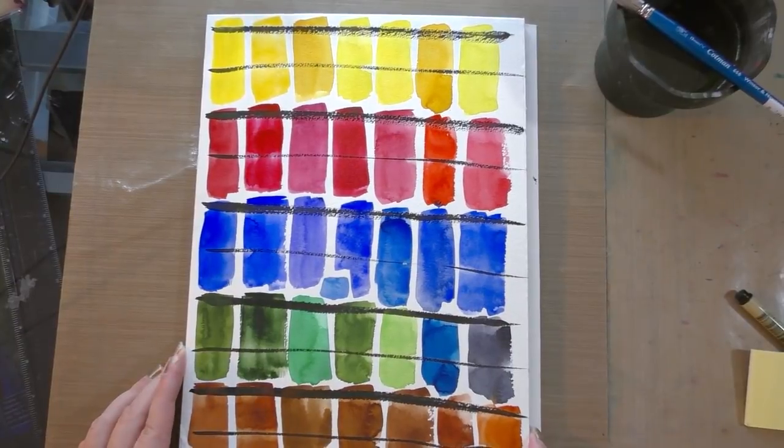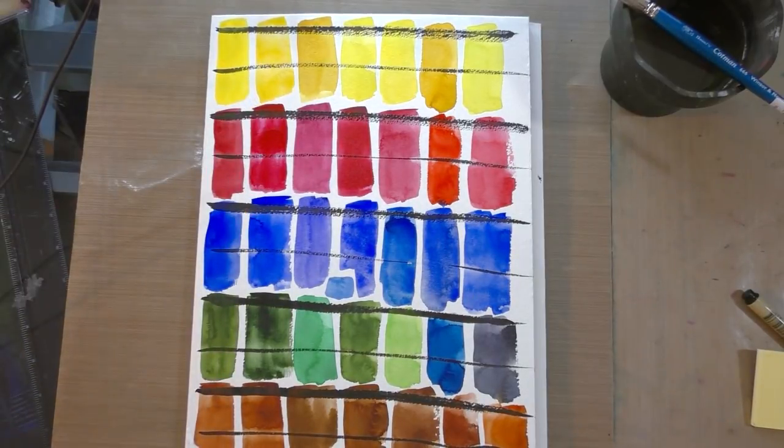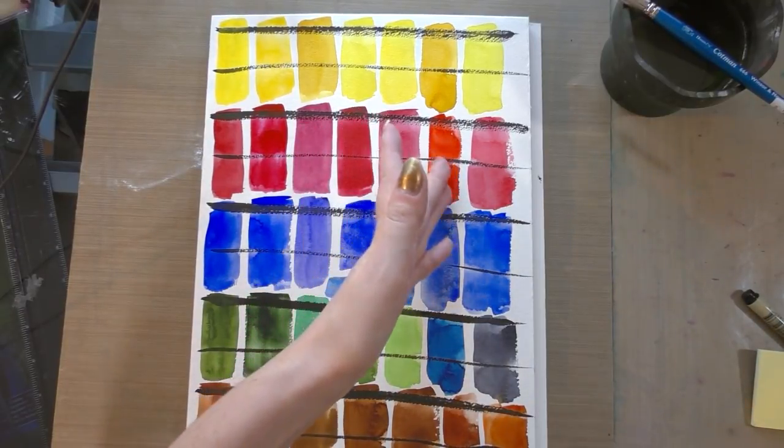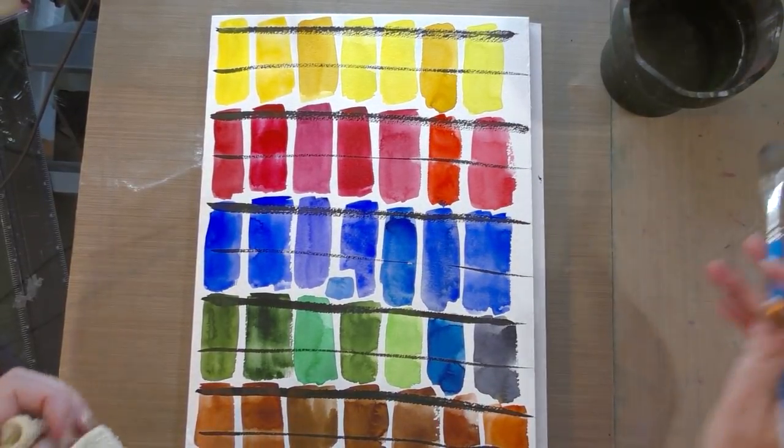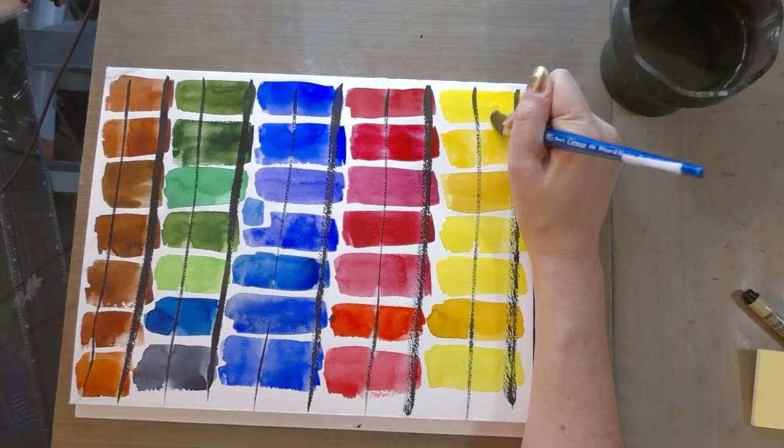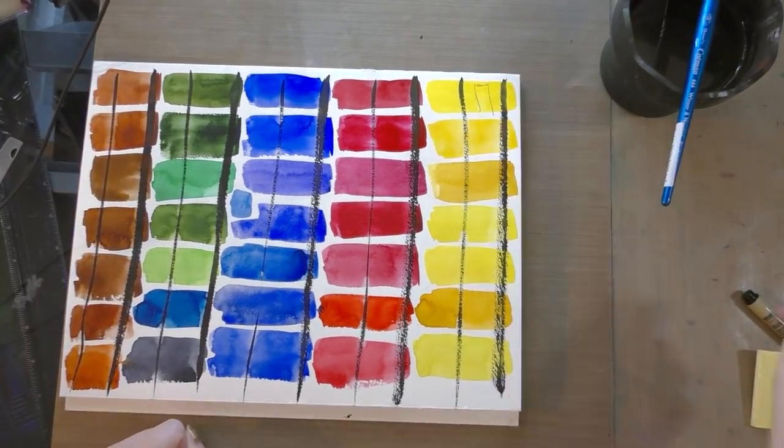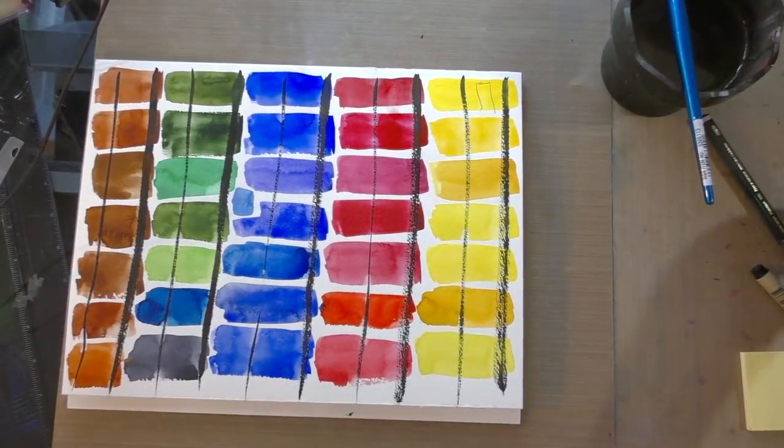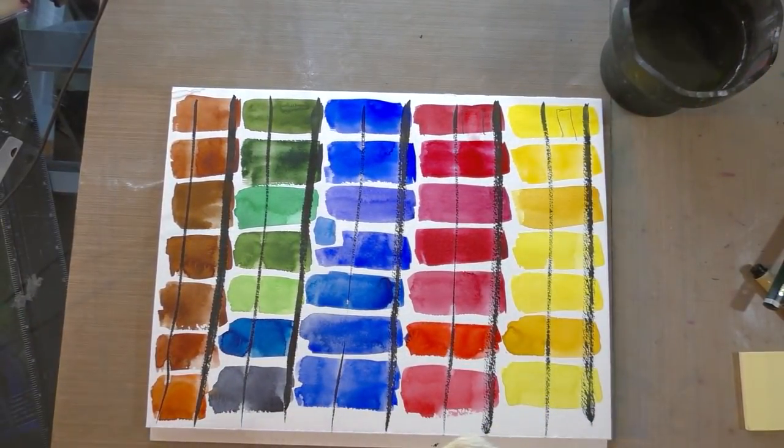All right, art nerds. These have had a chance to dry overnight. In case you've forgotten the order, we have M Grahams, we have White Knights, we have Core, we have Mijello Mission Gold, we have Holbein, we have Daniel Smith, and we have Sennelier. So this is the half pan lift test. There shouldn't be much of a difference, but I want to do it for consistency sake. In fact, I think it is a little less prone to lifting.